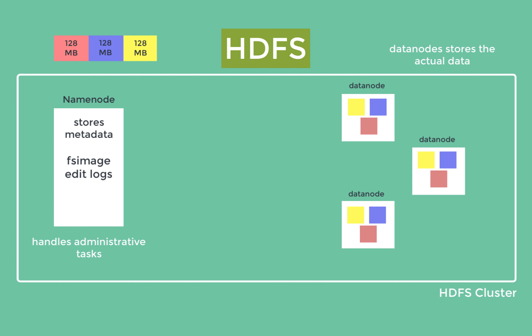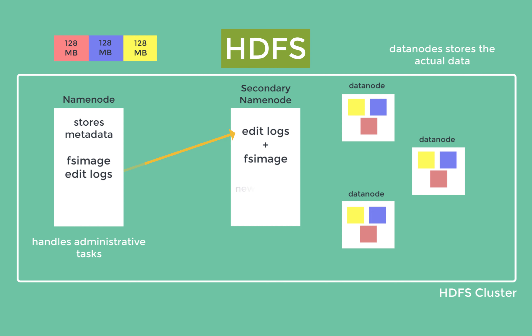There is one more component in this architecture: the Secondary NameNode. It downloads the edit logs from the primary NameNode and merges them with the current fsimage to create a new fsimage checkpoint. This process is called checkpointing. The Secondary NameNode is not a backup node for the primary node; instead, it assists the primary node by periodically checkpointing its metadata. The fsimage and edit logs are merged into one by the Secondary NameNode during checkpointing, and whatever new changes happen in HDFS get stored in new edit logs, which are then merged in the next checkpointing cycle.